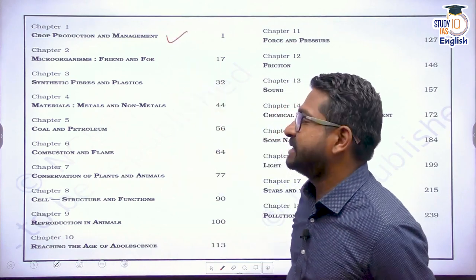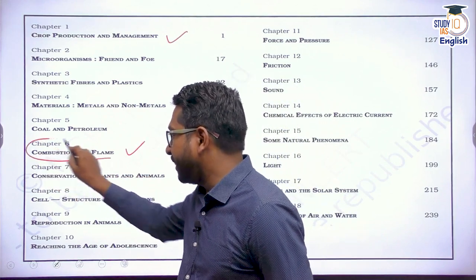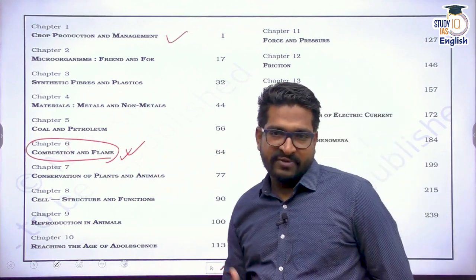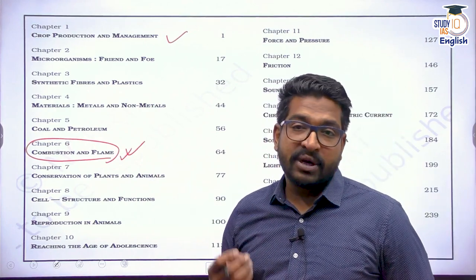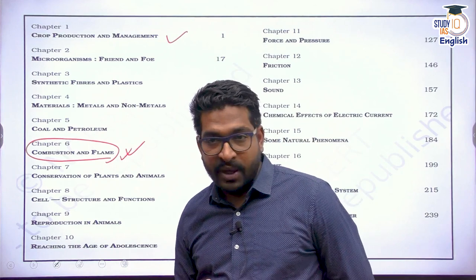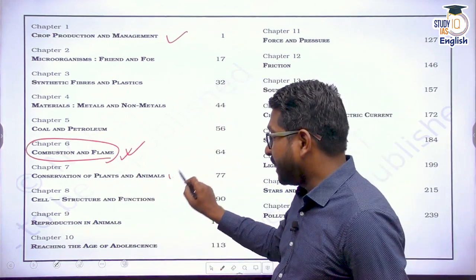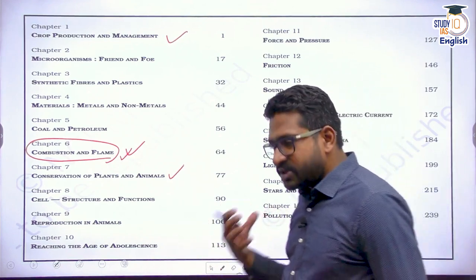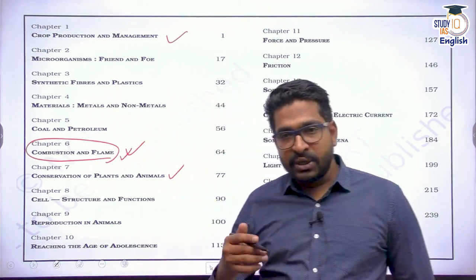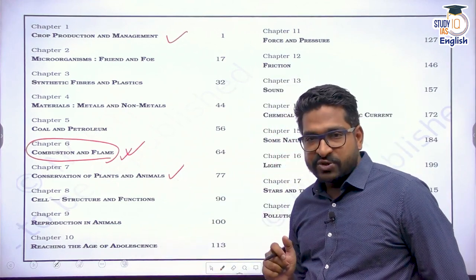We are already done with chapter 1 till chapter 6. In the last lecture we spoke about combustion and flame — although by name the chapter looks very innocent, we got to know a lot about combustion, how we can stop fires, what is a flame, and its characteristics. Today we will talk about conservation of plants and animals — a very important discussion relevant not just from a science perspective but also for UPSC Civil Services preparation.